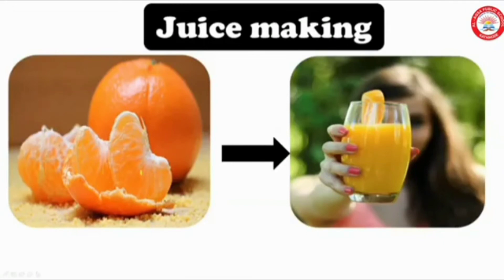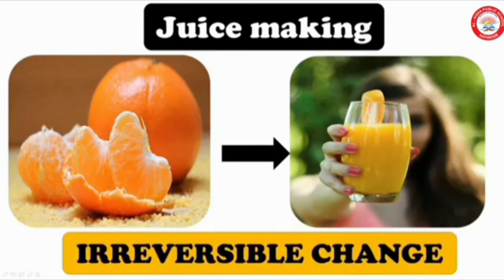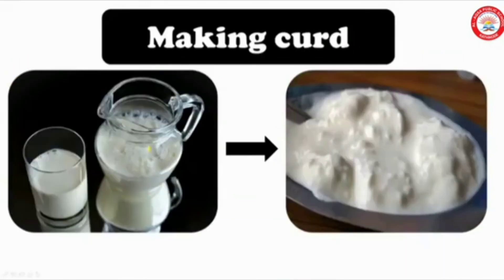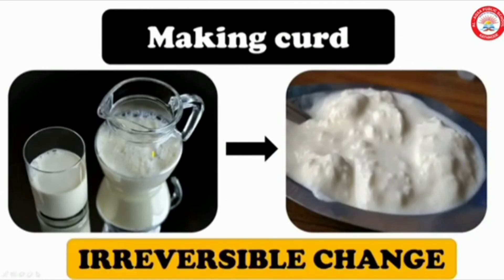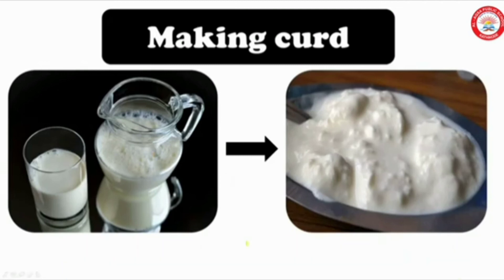Juice making — is it reversible or irreversible? It is an example for irreversible change. Making curd: we are making curd from milk. Can we get back milk again? No. It is an example for irreversible change.